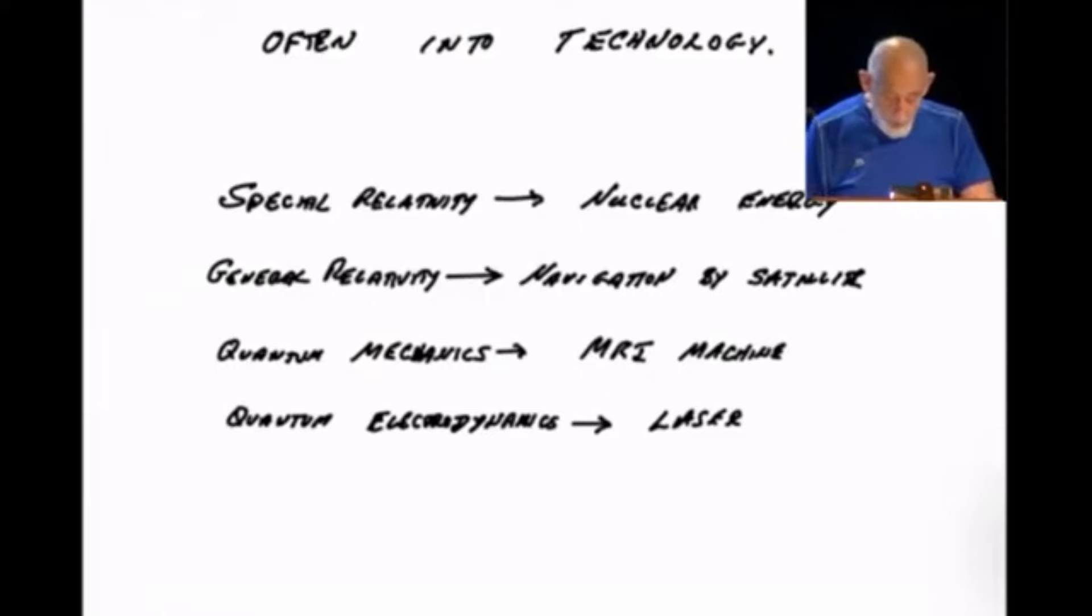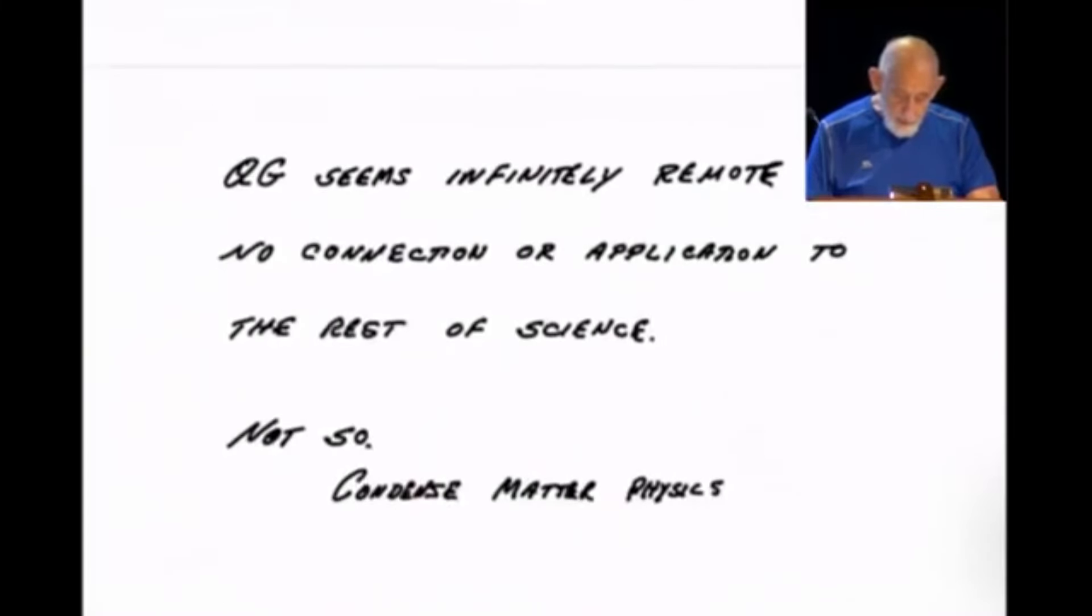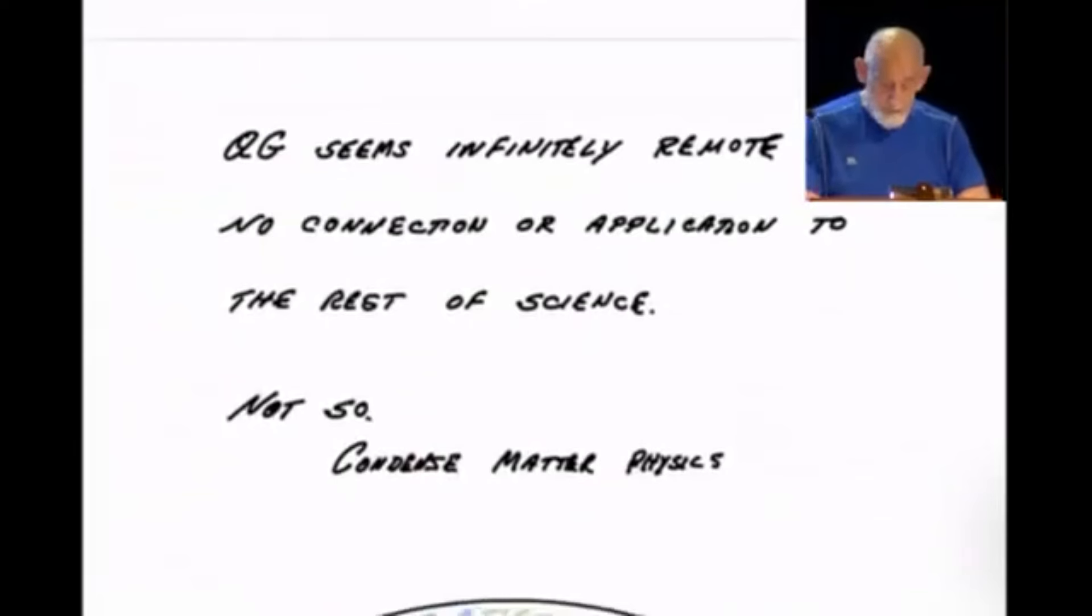And quantum mechanics was not invented by people trying to do technology. It was invented by people who are curious about the atom. Quantum mechanics, among other things, it led to the MRI machine. But so many things that the list would go on and on. Quantum electrodynamics, trying to understand the quantum mechanics of electrons and photons, in particular photons, led to the laser, or at least it's closely connected with the laser, and so forth and so on. What about quantum gravity, general relativity and its connection to quantum mechanics? It seems so infinitely remote, with no connections or applications to the rest of science. It could be that that's true. It could be we're just stuck with that. But that has not been what is happening.